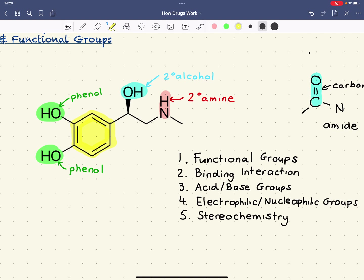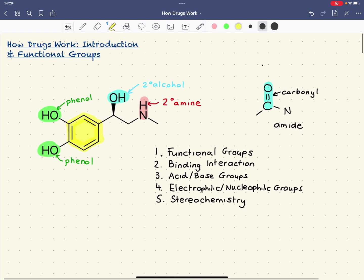And again, that's important because that can undergo certain types of binding interaction. So that's just a bit of an introduction to what we need to, what factors influence how drugs work. And here we've looked at the functional groups. The next video will look at binding interactions and then we'll look at all these separate factors individually in future videos.